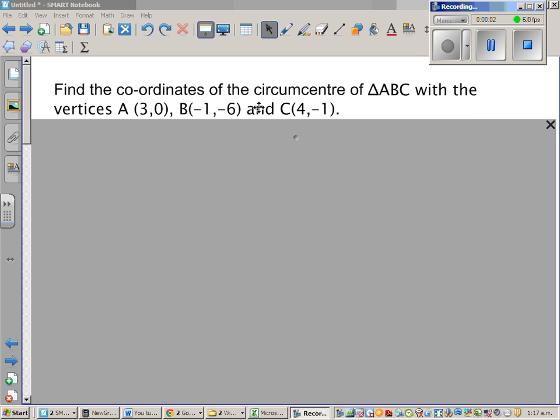Find the coordinates of the circumcentre of triangle ABC with vertices A(3,0), B(-1,-6), and C(4,-1).